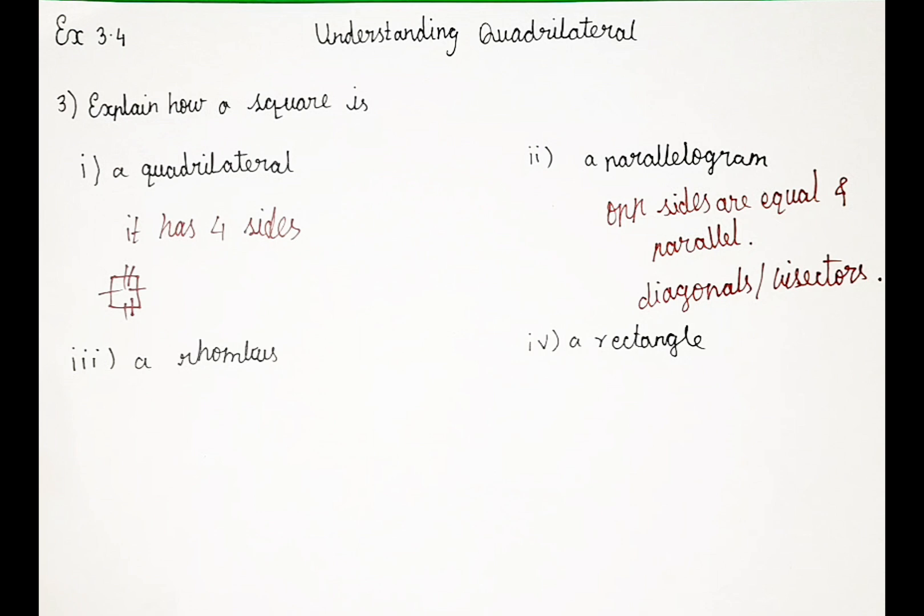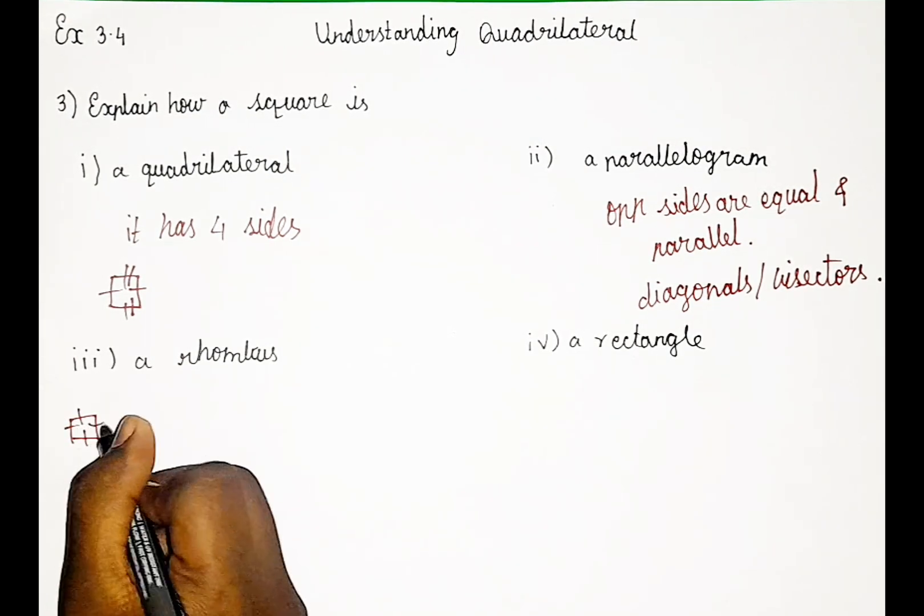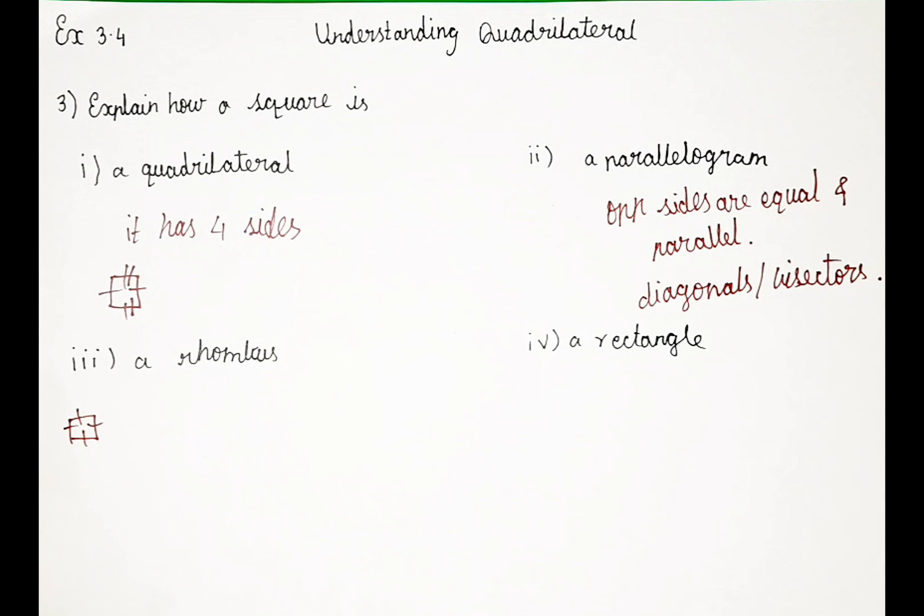So next we have to prove how a square is a rhombus. So in square, you guys know, what is the property of a square? In square, all sides are equal. What about a square? In square also all sides are equal. But we are mentioning it as opposite sides. But both are similar.